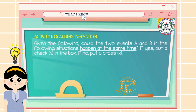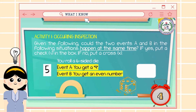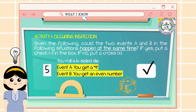Number 5: You roll a six-sided die. Event A: you get a four. Event B: you get an even number. The answer is Check! This event can happen at the same time because four is an even number and can be one of the even numbers on a six-sided die.